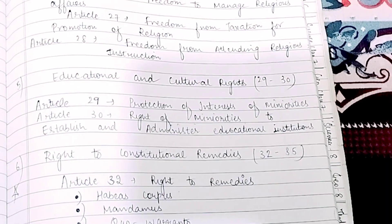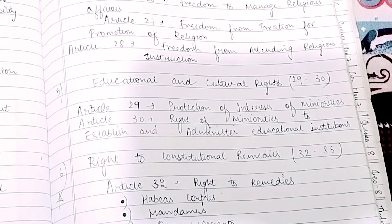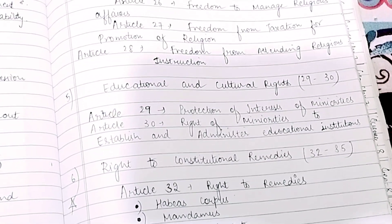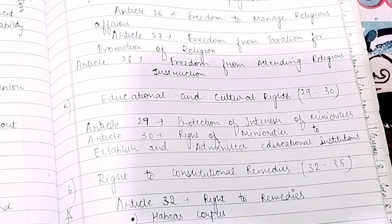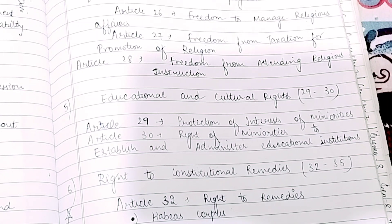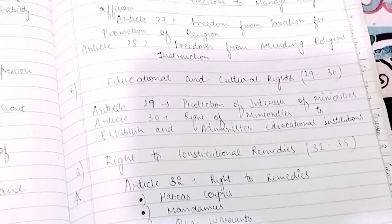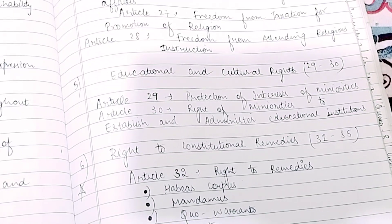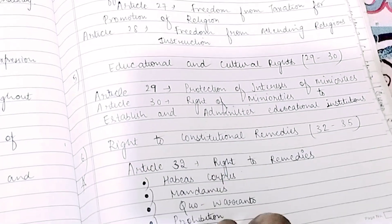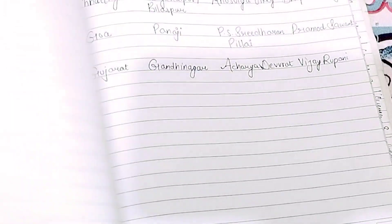The most important right is the Right to Constitutional Remedies. Article 32 is the right to constitutional remedies. It includes the writs: Habeas Corpus, Mandamus, Quo Warranto, Certiorari, and Prohibition — all of which are tools for seeking justice.